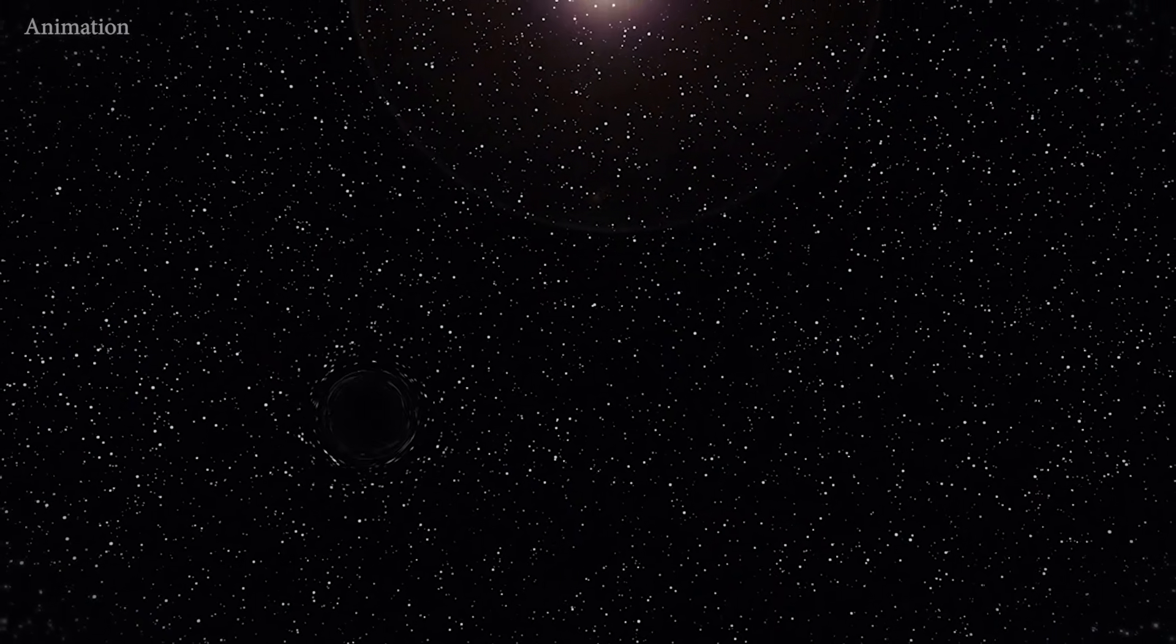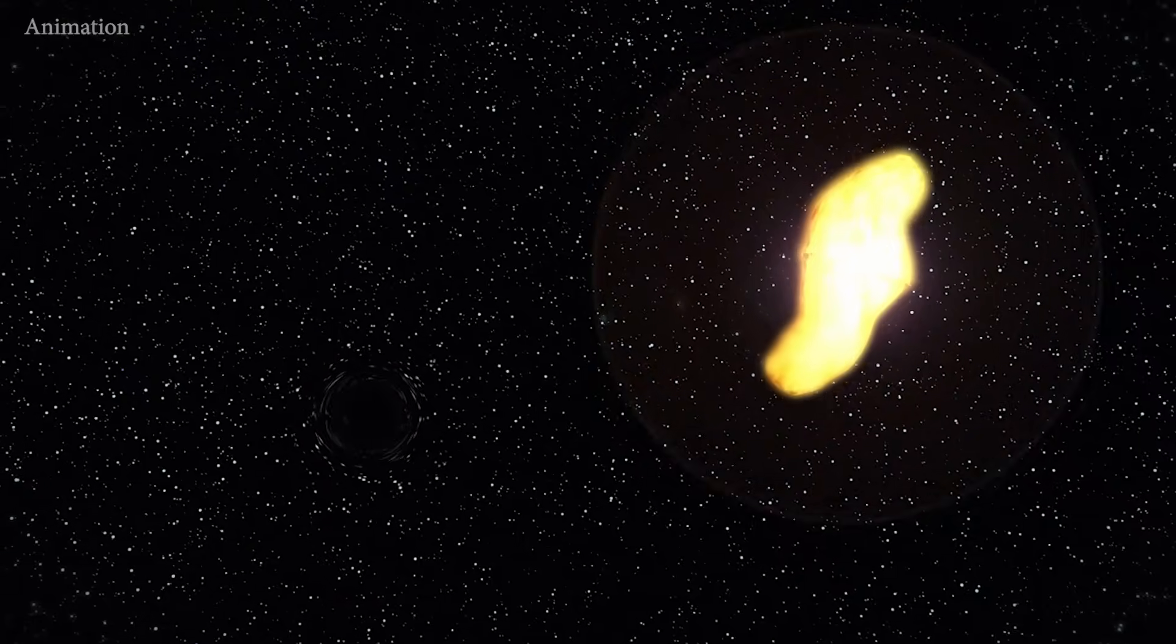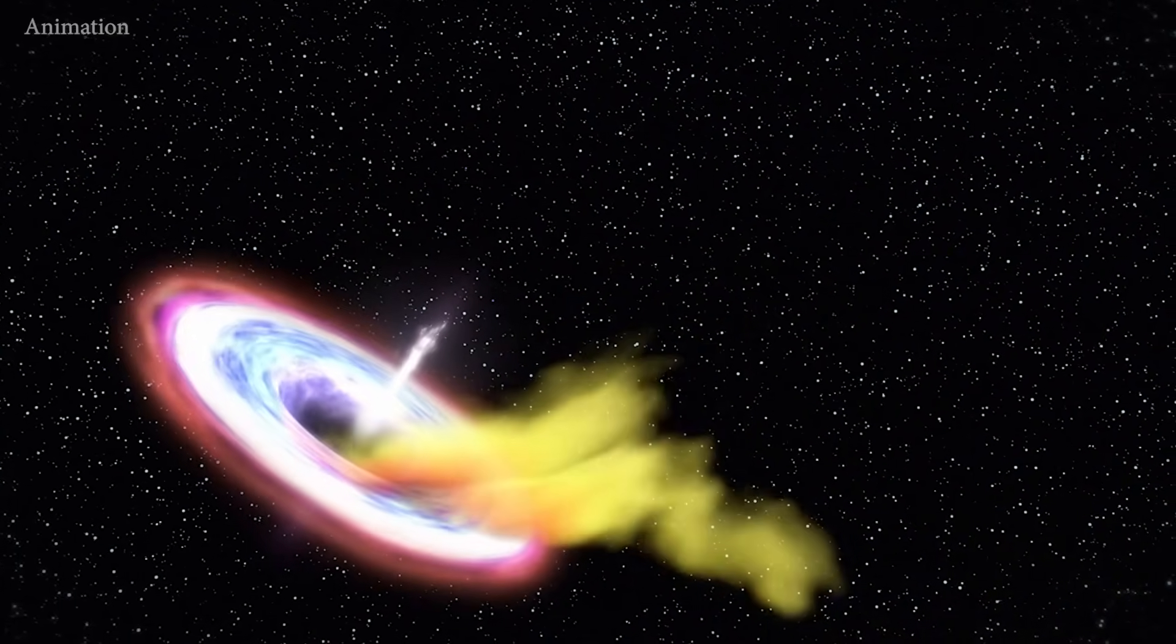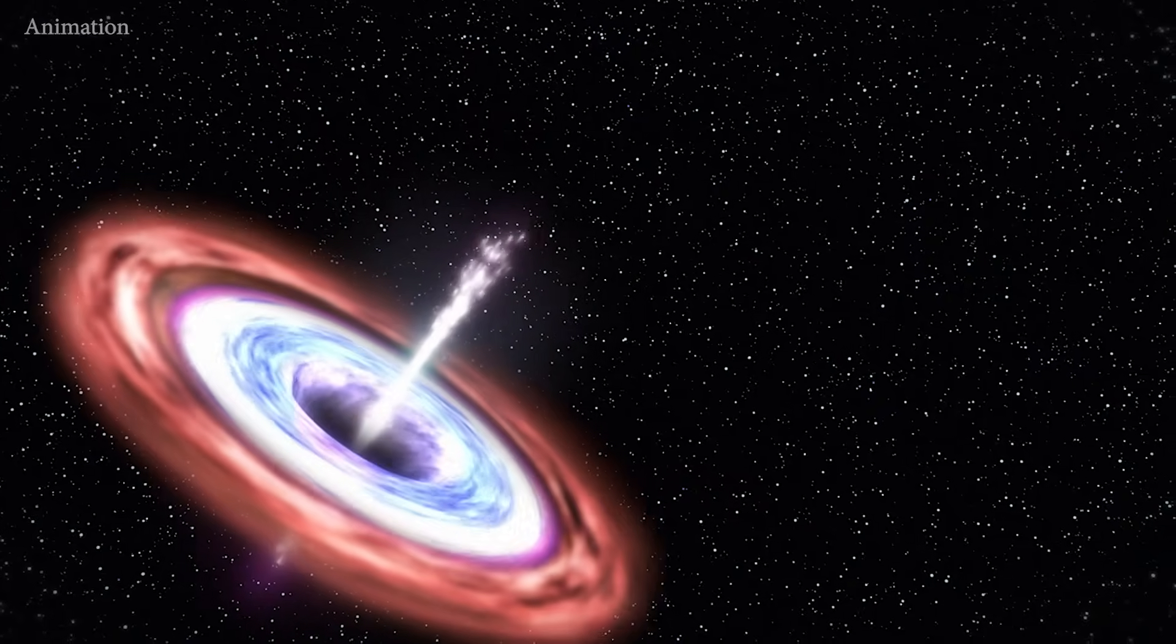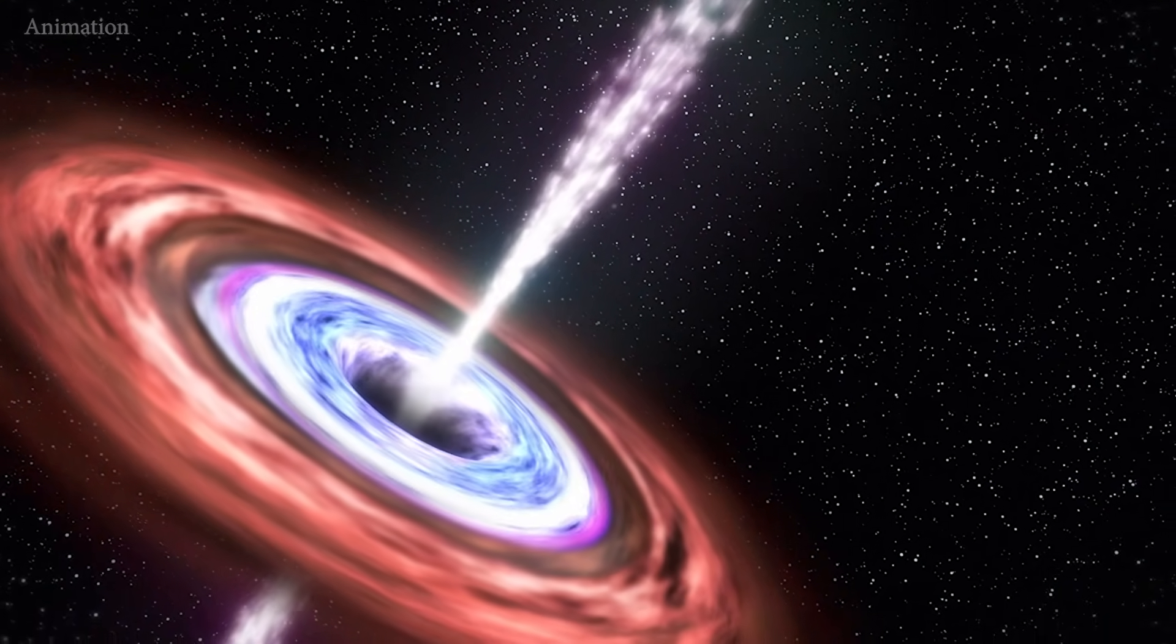Hubble examined the same location in ultraviolet and optical light, revealing a dense cluster of stars surrounding the black hole. These stars are packed so tightly that they're only a few light months apart, about 500 billion miles, providing a convenient potential food source for the black hole.